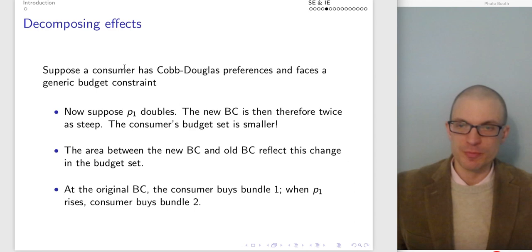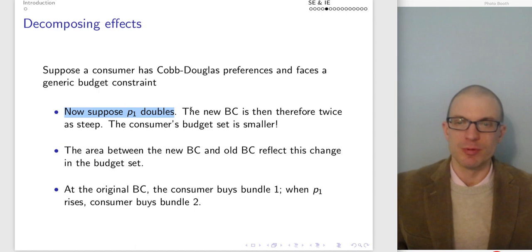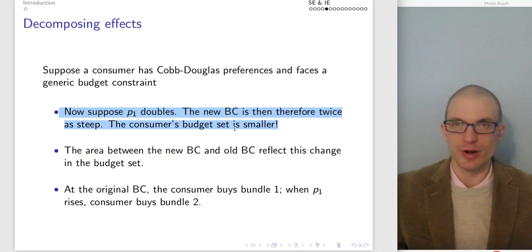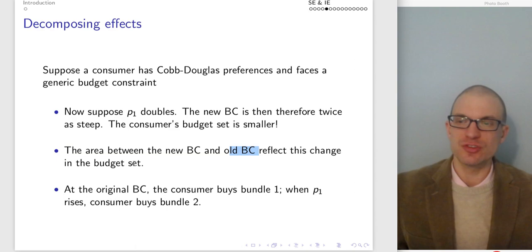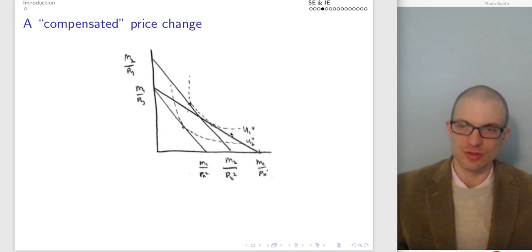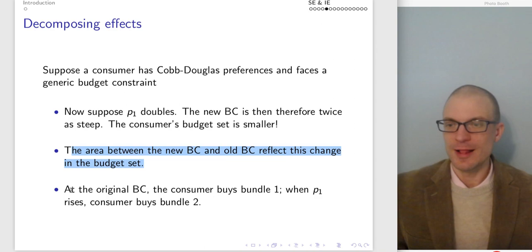Suppose the consumer has Cobb-Douglas preferences and faces a generic budget constraint. Suppose the price of good one doubles — the new budget constraint is therefore twice as steep and the budget set is smaller. We're losing bundles that could have previously been consumed but are now no longer affordable. The area between the new budget constraint and the old budget constraint reflects this change in the budget set — we lost this triangle when the price doubles.